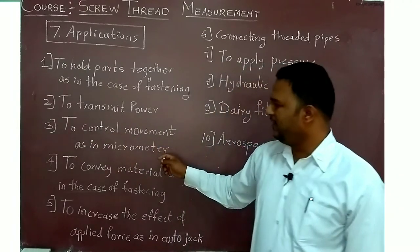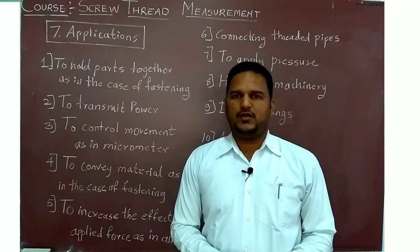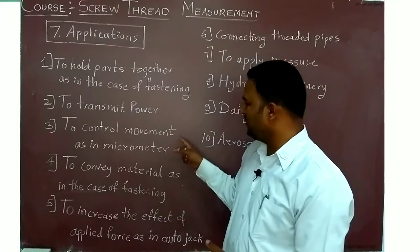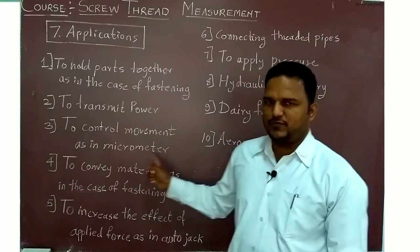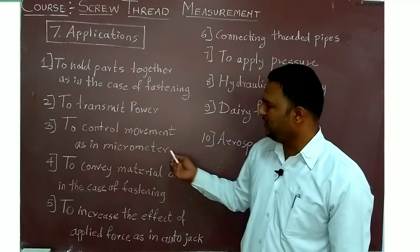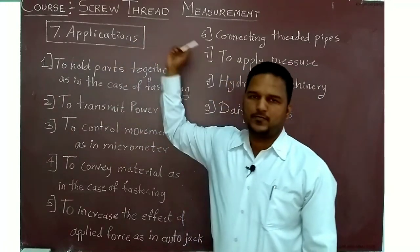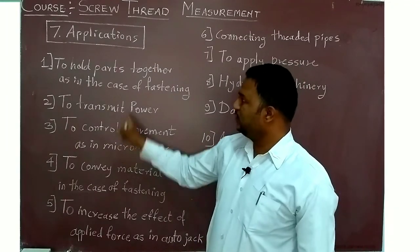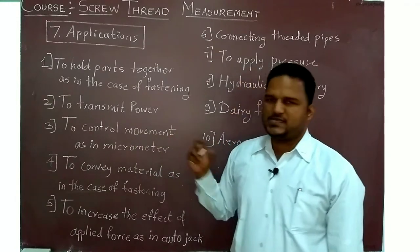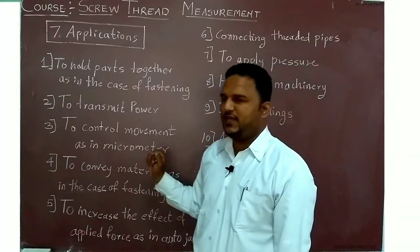Third is to control the movement as in the micrometer. You know the micrometer is useful for measurement and accuracy purposes. The least count of the micrometer is maybe 10 microns. In that micrometer we use the screw thread to get the accurate reading. The screw thread is very important in the micrometer. That will control the precise movement of the plunger or the angle.